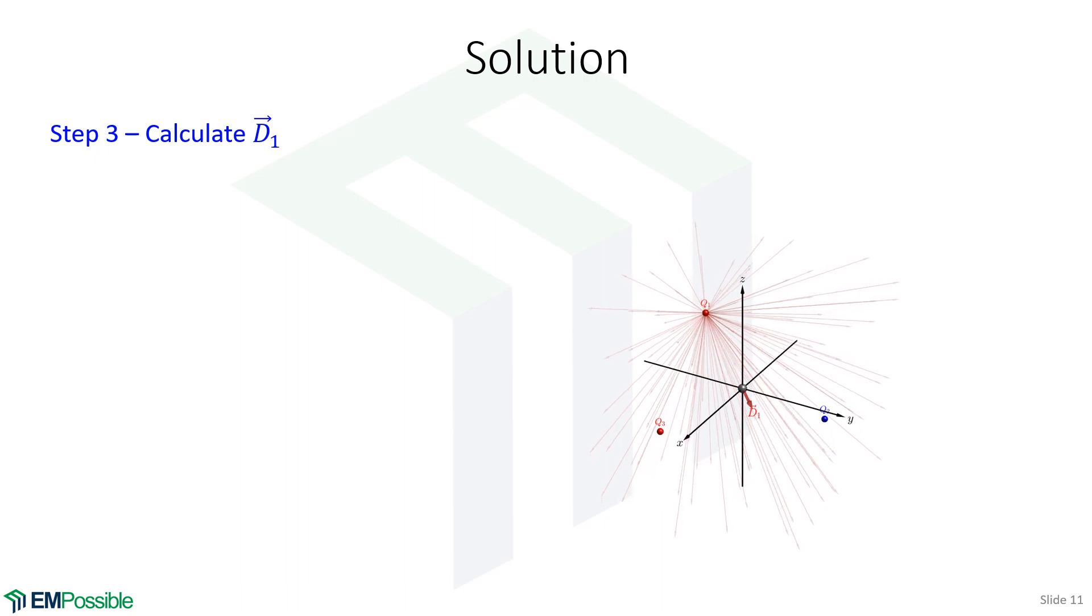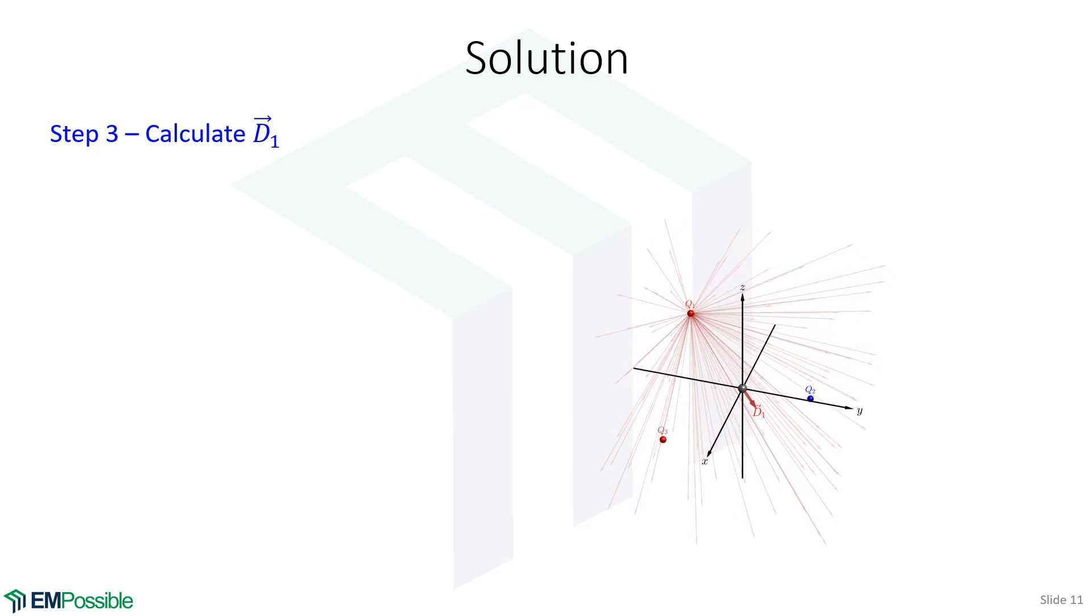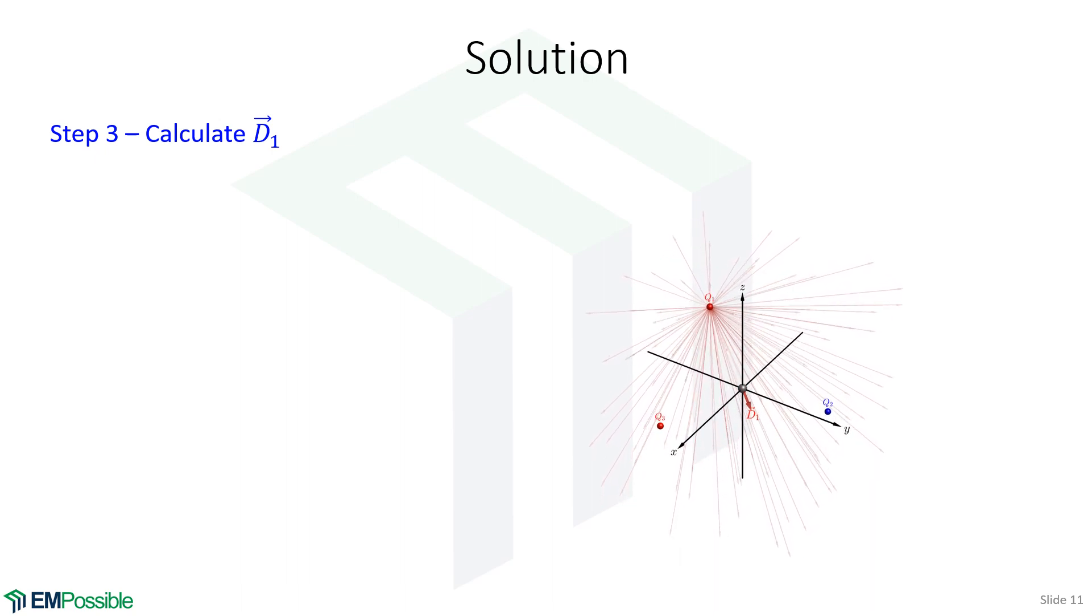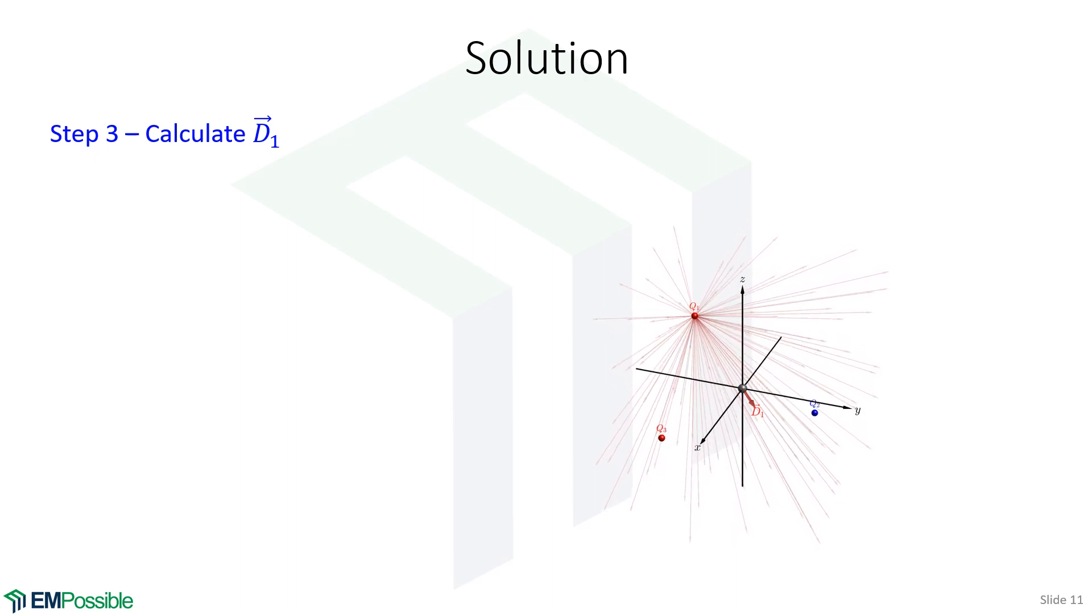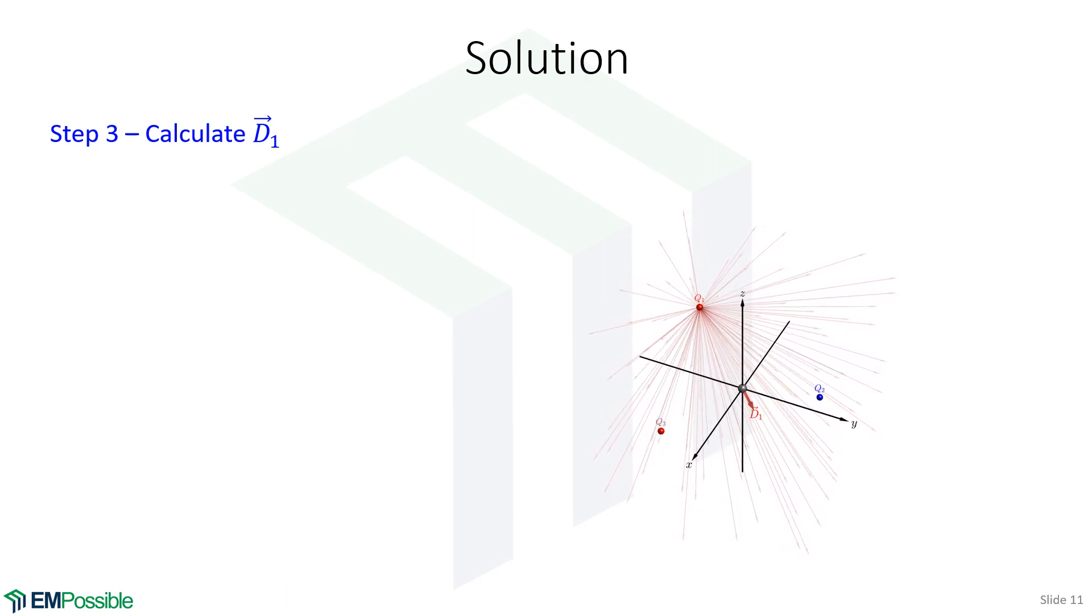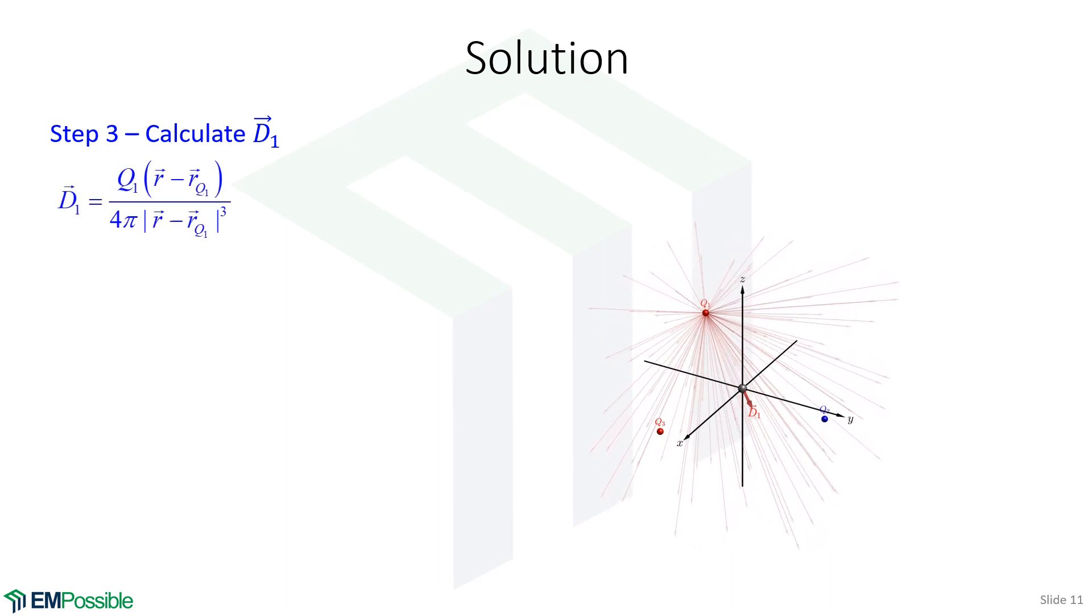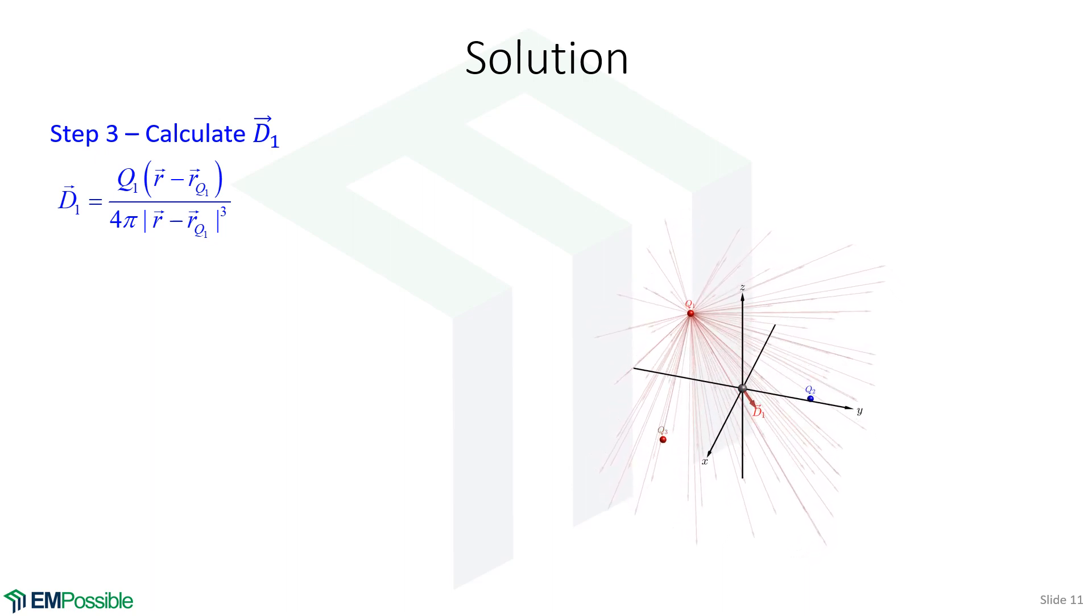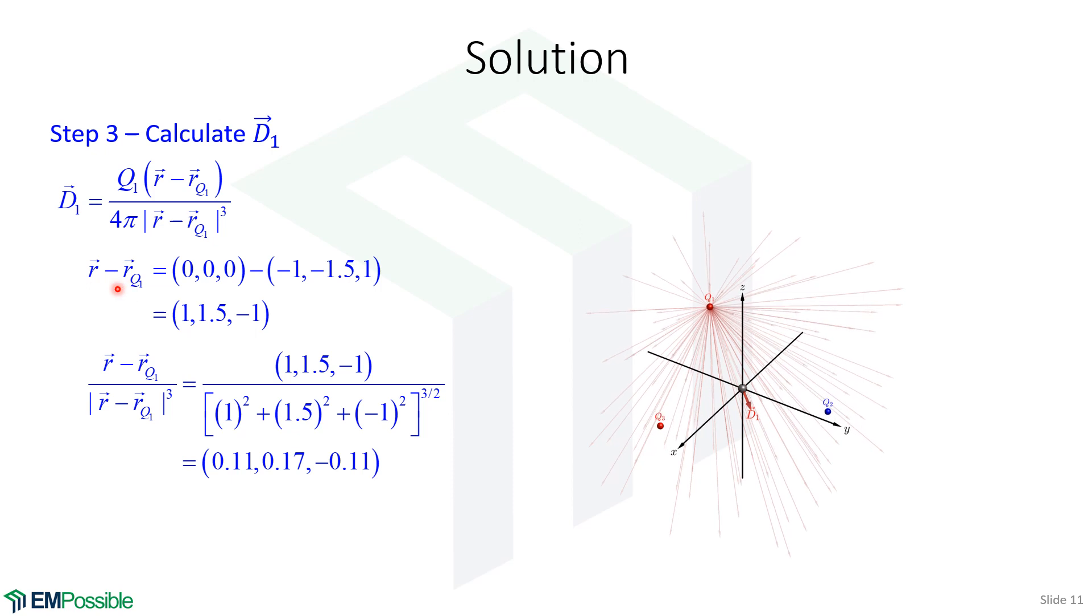The first thing we'll do is calculate D1. This is the electric flux density at our observation point due to the first charge. The first charge is over here, labeled Q1. Just for fun, I've drawn all the electric field lines emerging from that. The electric flux density at our observation point would be parallel to the line crossing through that point. Let's go ahead and calculate what that is. We'll use this form of our equation to calculate electric flux density from a single point charge. This is the form that I like to do calculations with.